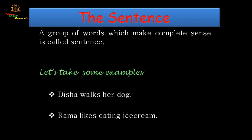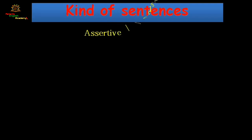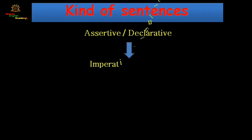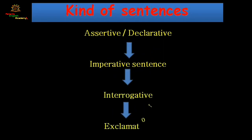Now let's look at the kinds of sentences. We have four kinds of sentences. First is the assertive or declarative sentence. Second is the interrogative sentence. Third is the imperative sentence. And the fourth is exclamatory sentences. Now let's look at these sentences in detail.